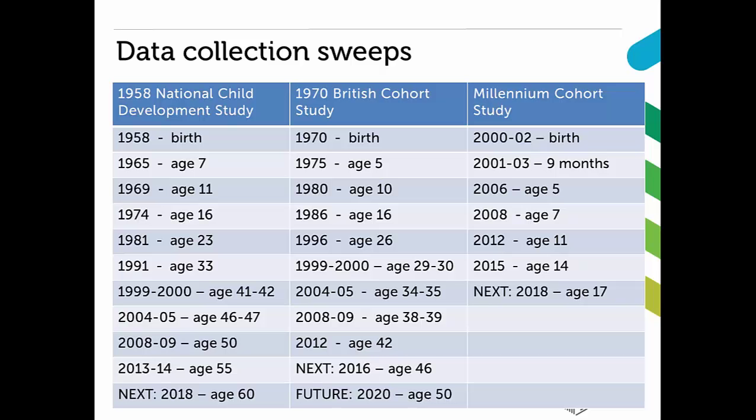In terms of data collection sweeps, the 1958 National Child Development Study had its first sweep at birth and there have been nine subsequent sweeps. The next data collection sweep is planned for 2018 when cohort members turn 60 — so already in one study we have a picture of people's lives from birth right up to the cusp of retirement age. The 1970 British Cohort Study has had eight sweeps in addition to birth data, with cohort members currently around 46 years old and a sweep planned for 2020. The Millennium Cohort Study has data available up until age 14, with the next one planned for when they turn 17.